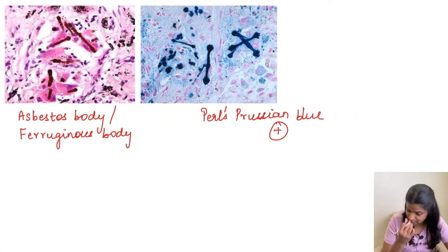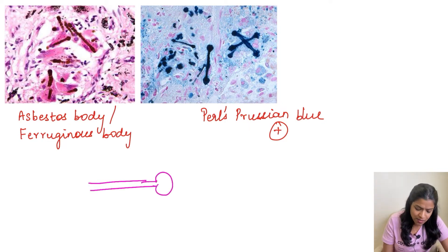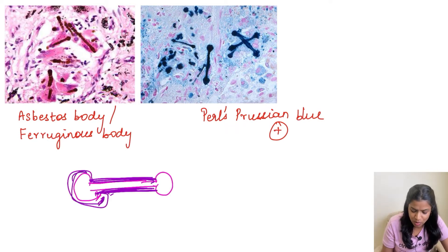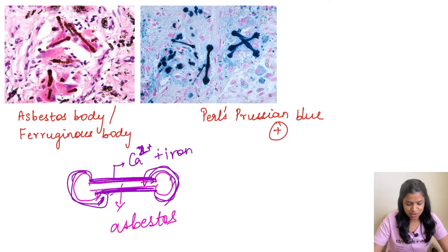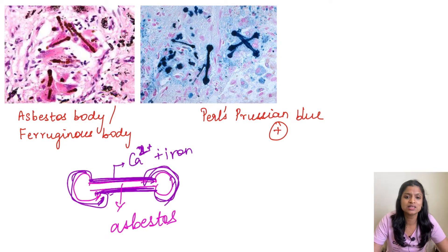The next example is an asbestos body, also called a ferruginous body. In the center is the asbestos fiber, and iron and calcium salts surround this fiber. This asbestos body is an example of dystrophic calcification. Since it contains iron it can be stained with Pearl's Prussian blue, and since it contains calcium it can also be stained with Von Kossa.